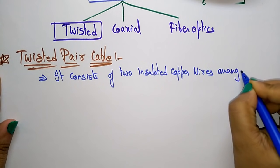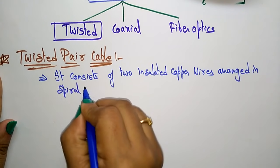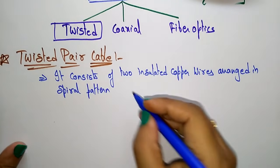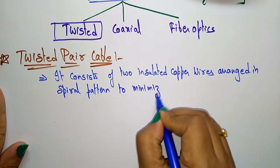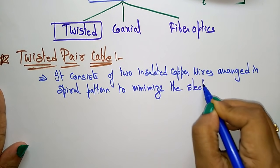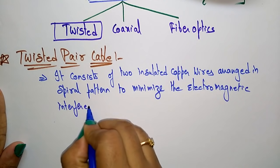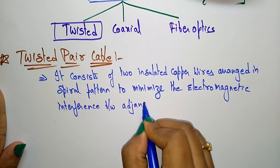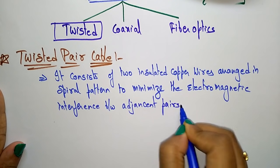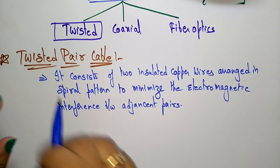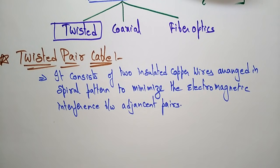They are arranged in a spiral pattern to minimize electromagnetic interference between adjacent pairs. Those two insulated copper wires are arranged in a spiral pattern to minimize electromagnetic interference. That is why we call it a twisted pair cable — we twist the two insulated copper wires to avoid electromagnetic interference.